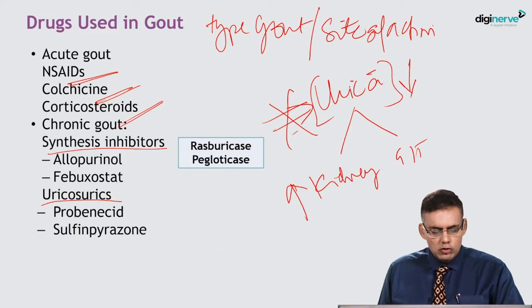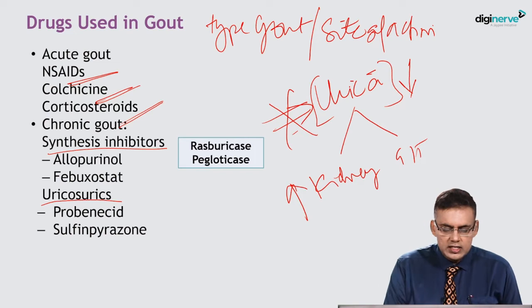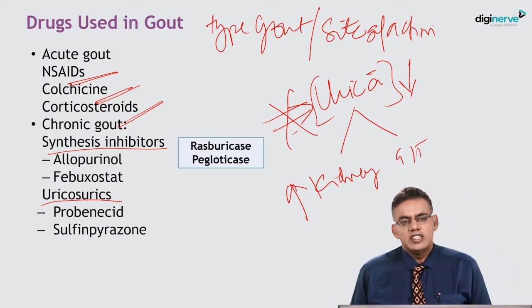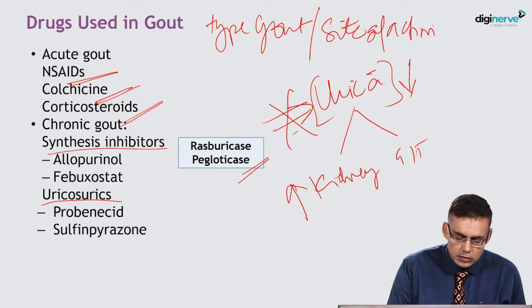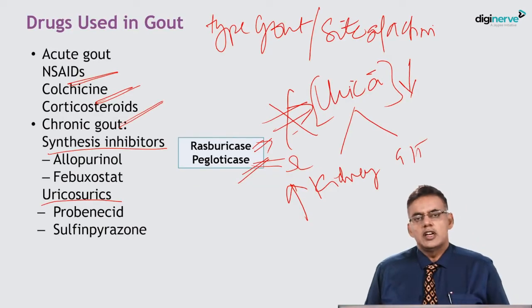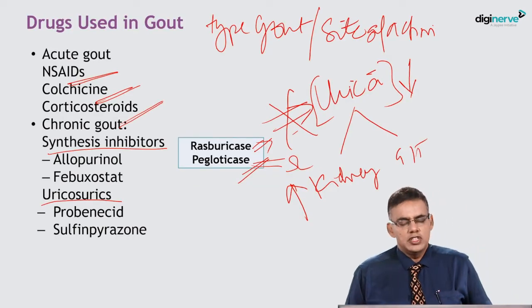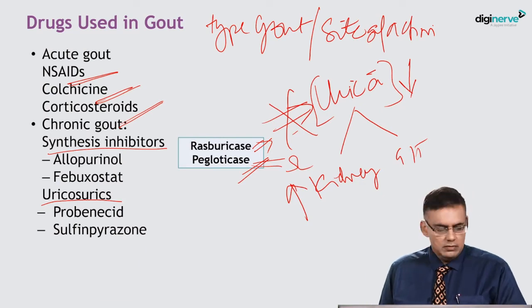We have two newer drugs now available: rasburicase and pegloticase. Pegloticase is useful in patients with resistant gout, and rasburicase is especially useful in patients with hyperuricemia associated with malignancies.